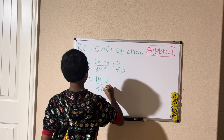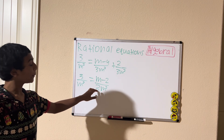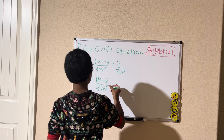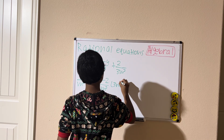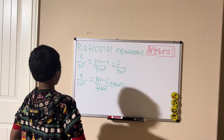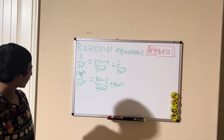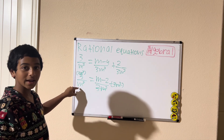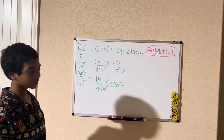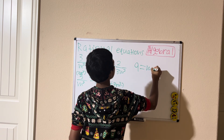Now, divided by 3m squared — what do we do? I want to multiply both sides of the equation by 3m squared to cancel out the denominator. If you multiply what's in the denominator it will cancel out. Multiplying 3m squared divided by m squared gives us 3, so the m squared cancels out, and we have 3 times 3 which is 9. After simplifying, the equation becomes 9 equals m minus 2.